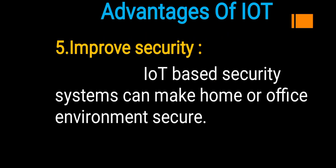The fifth advantage of IoT is improved security. An internet of things-based security system can make home or office environments more secure. Through an automated camera system connected across all devices and locations, security can be monitored and maintained effectively for homes and offices.